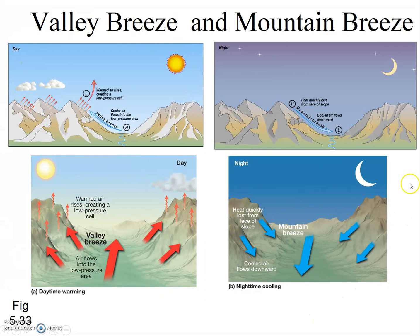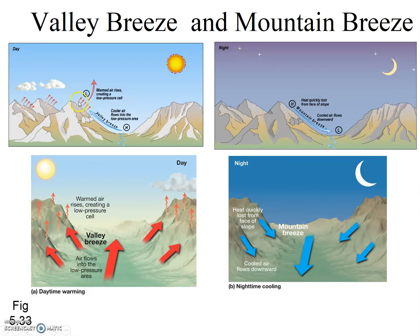Valley breezes and mountain breezes operate in much the same way, named from the location the wind is coming from. During the day in a mountainous region, the southern-facing slopes heat up, the air expands and rises, creating a localized low pressure, and air streams up the mountain — a valley breeze. This can even create clouds and rainfall in the afternoons in the mountains. At nighttime, especially in winter, the high elevation exposed rock cools off greatly due to radiative cooling, creating a localized high pressure, and wind streams down the mountain — a mountain breeze.